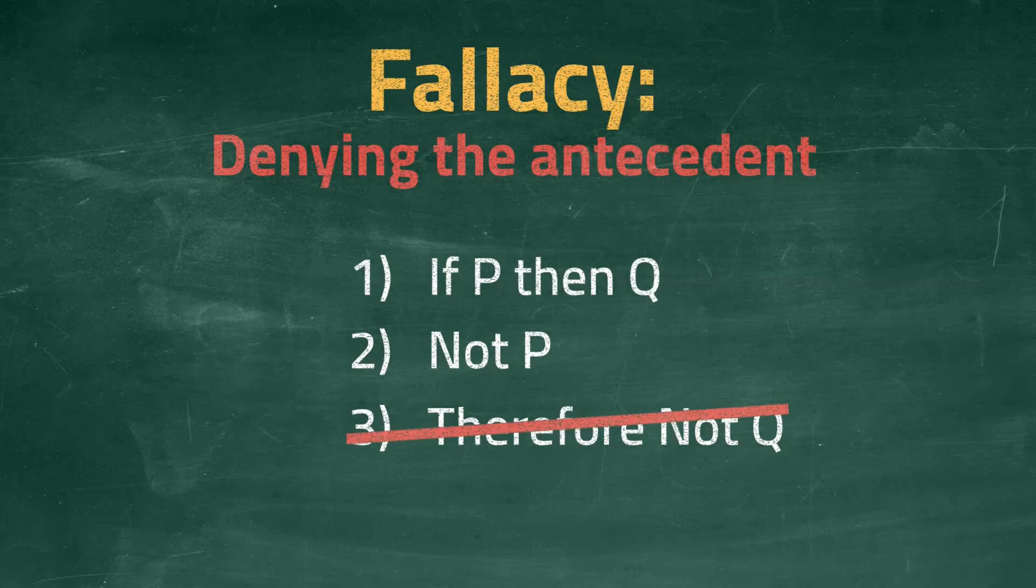Because observing P is false says nothing about Q. It is possible, for example, for P to be false and Q to be true. And it is this scenario that makes the argument fall down.